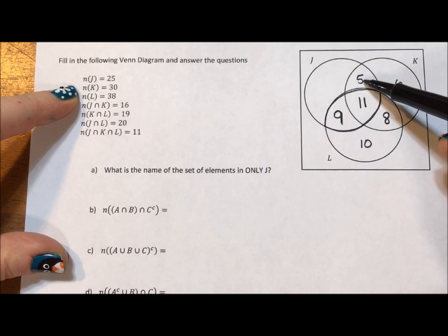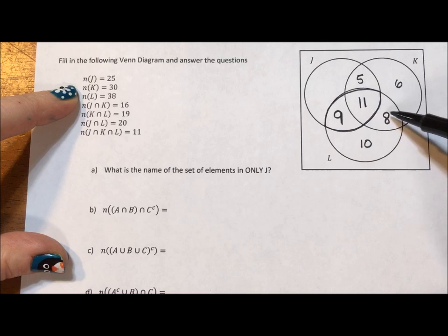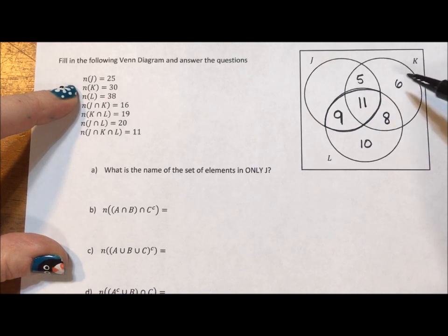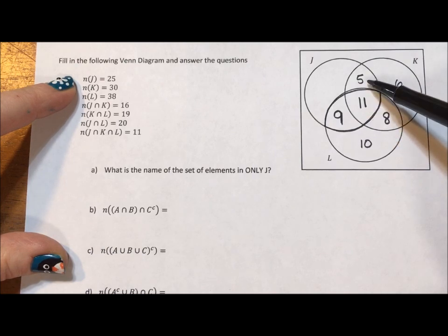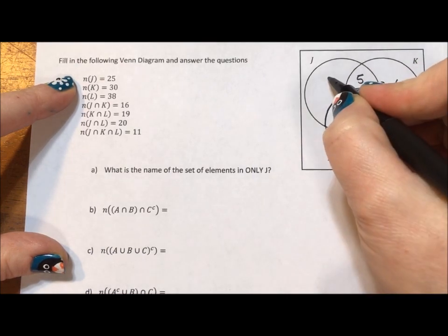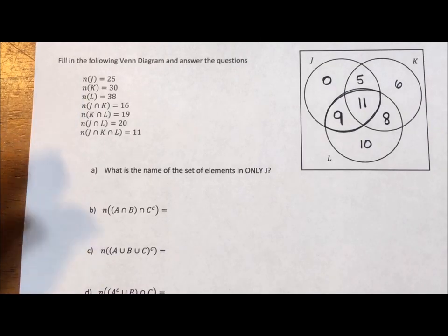Let's see, 6 plus 5 is 11, 11 plus 11 is 22, 22 plus 8 is 30. I like to add it a couple of times, just to make sure I have my math correct. And last, this region is 25. Well, 9 plus 11 is 20, and 20 plus 5 is 25, which means there are zero elements right there. The region that is J and J alone does not actually have any of its own elements.